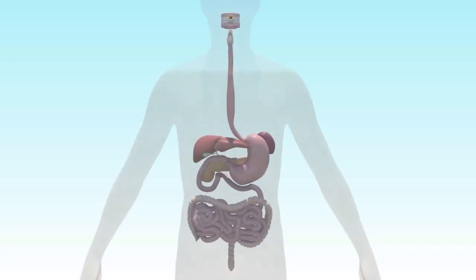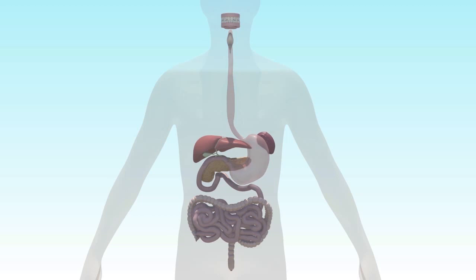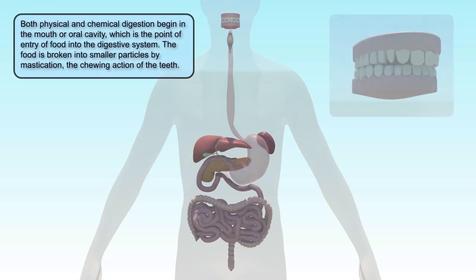In this video, we will talk about the basic components of the human digestive system. Both physical and chemical digestion begin in the mouth, or the oral cavity, which is the point of entry of food into the digestive system.